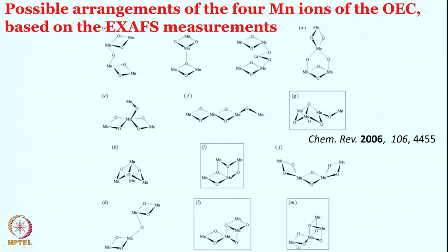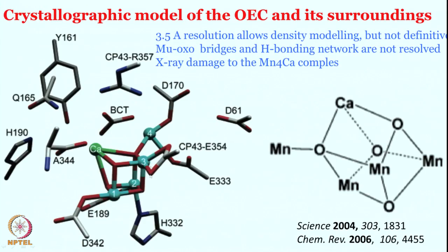These are the structures which got support from the EXAFS study. If you look at that crystal structure in the Science paper, this is the center where you see the four manganese centers 1, 2, 3, 4 situated. Calcium is bound in between, but more importantly this structure is believed to not be the right structure because X-ray is damaging the manganese-calcium and manganese-oxygen bonds. Nonetheless, although this is not reliable data for the 4-manganese 1-calcium structure, people believe it would be some combination of these species involved in the oxygen evolving center.